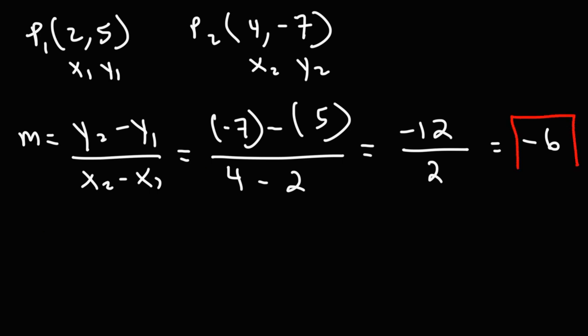So that is the slope of the line that passes through those two points. Let's try another example. For the sake of practice, go ahead and try this one. Feel free to pause the video and calculate the slope of the line that passes through those two points.